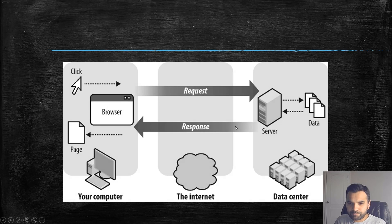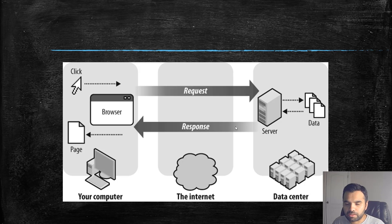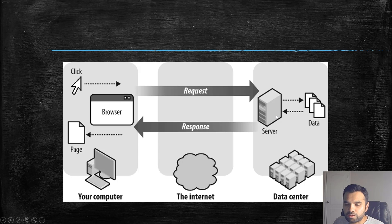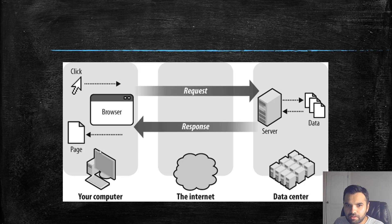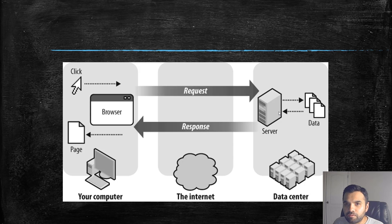The next question is: why can't normal activity performed through your local system have privacy or anonymity? Suppose you are using a basic browser like Chrome or Firefox and you send a request to a server — let's say google.com. That request first goes to your ISP, your internet service provider, then through different nodes, and finally hits google.com before a response is sent back. At various points, especially as traffic leaves your browser and goes to the ISP and then to the server, your ISP could sniff what you are doing.